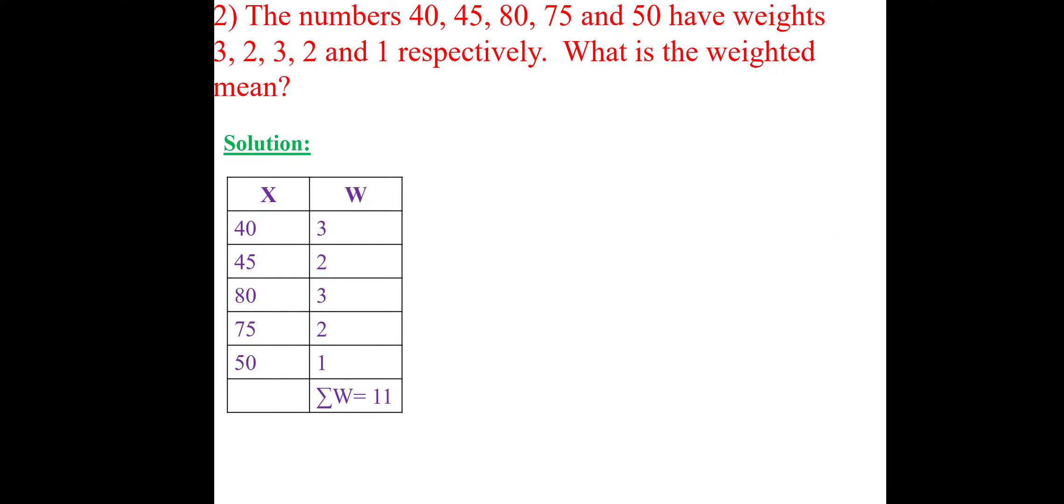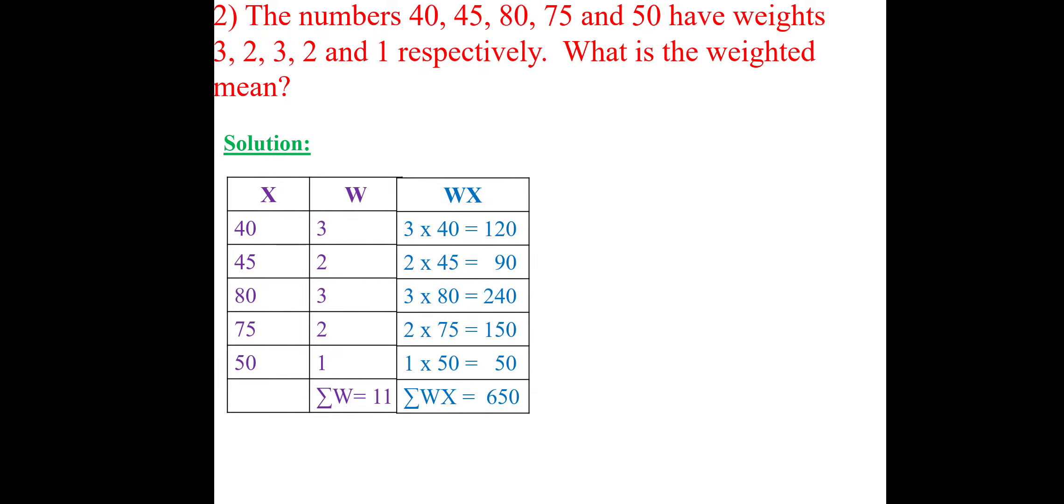We will be writing as X: 40, 45, 80, 75, 50. Weightage 3, 2, 3, 2, 1. So, total weightage is 11. So, summation W equal to 11. So, WX: W into X multiply 3 into 40, 120. 2 into 45, 90. 3 into 80, 240. 2 into 75, 150. 1 into 50, 50. So, total of this, we will get 650.